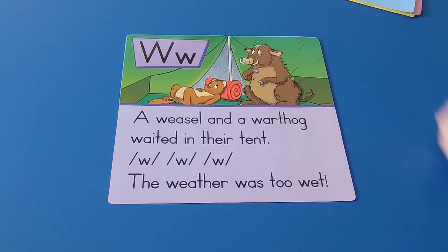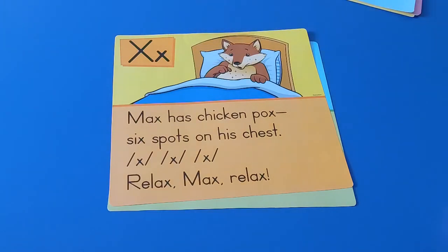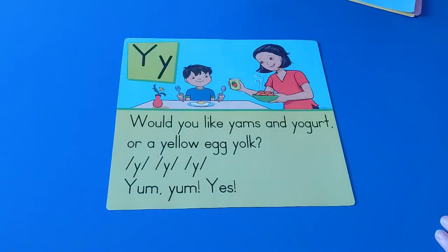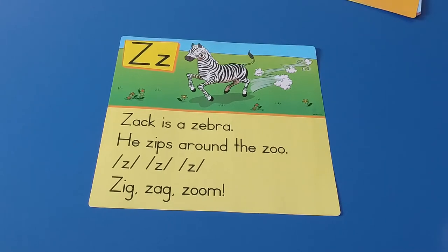Big W little w. A weasel and a wart hog waited in their tent. What? What? What? The weather was too wet. Big X little x. Max has chicken pox, six spots on his chest. X, x, x, relax Max, relax. Big Y little y. Would you like yams and yogurt or a yellow egg yolk? Yuh, yuh, yuh. Yum yum, yes! Big Z little z. Zach is a zebra, he zips around the zoo. Zzz, zzz, zzz. Zigzag zoom. And that was our alphabet cards.